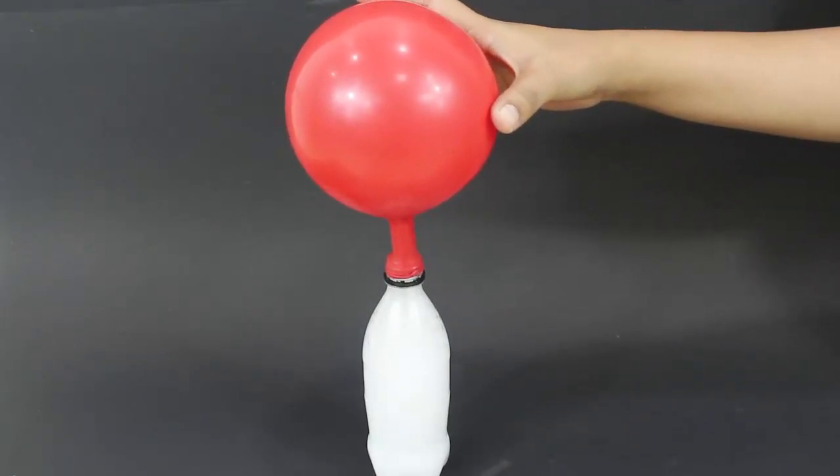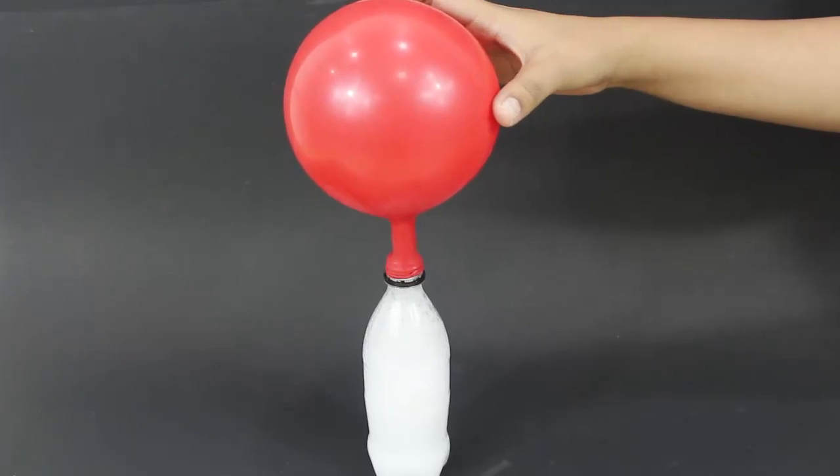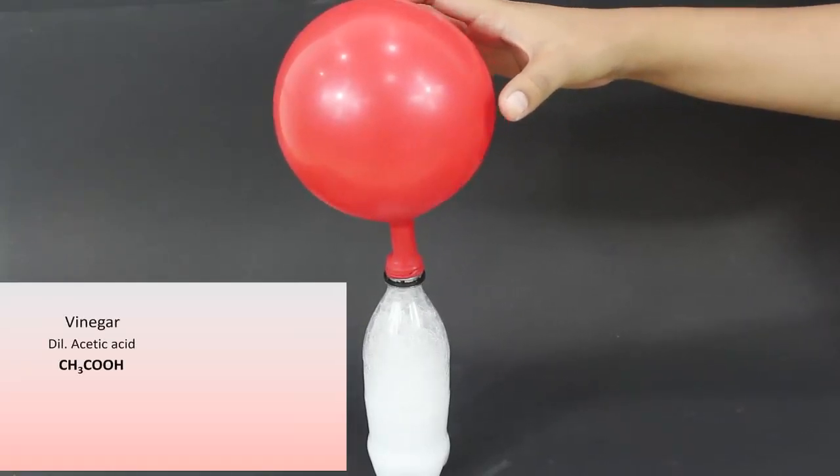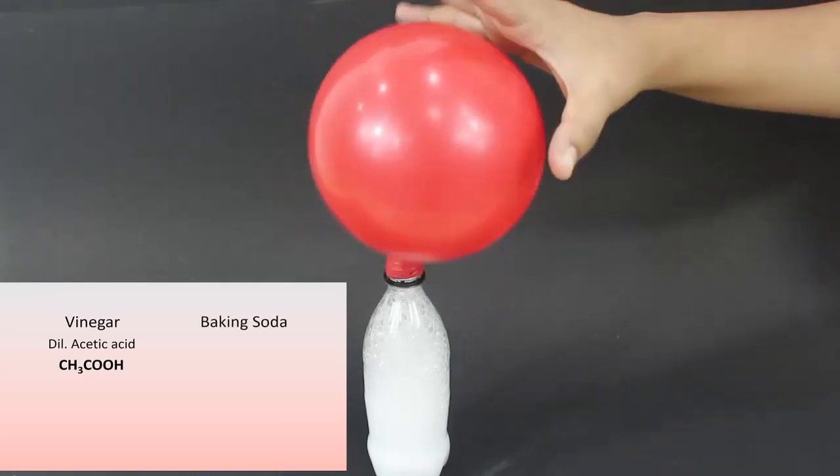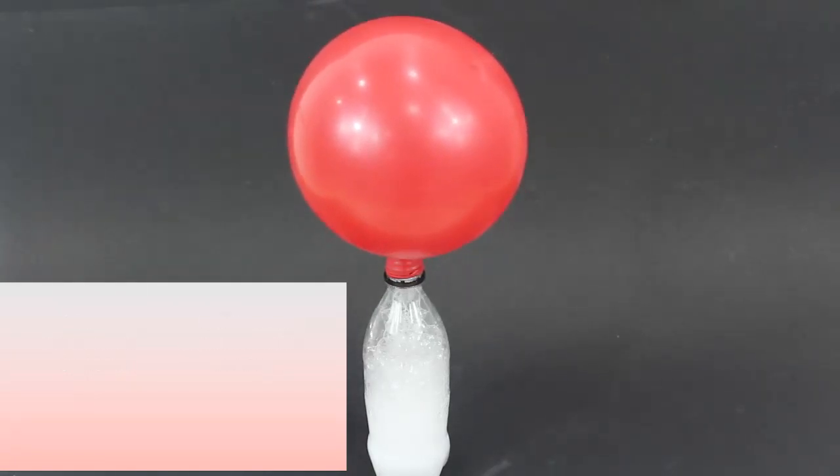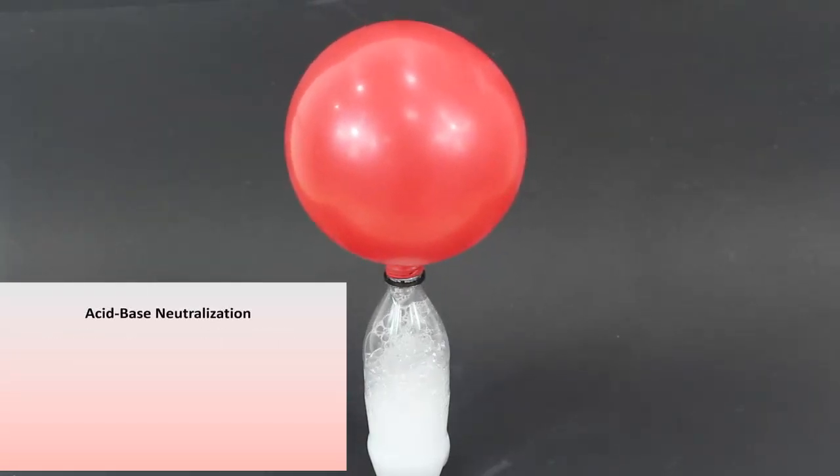Let's take a look at the chemical reaction that is taking place here. Vinegar is a dilute solution of acetic acid whereas baking soda is sodium bicarbonate which is alkaline in nature. Mixing these two chemicals is an example of acid based neutralization reaction. Usually neutralization reactions produce salt and water.